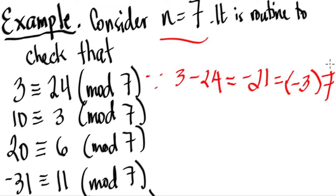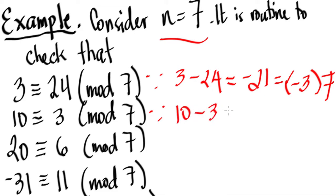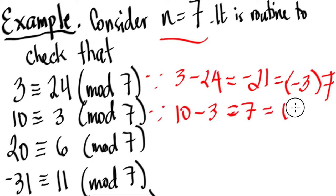Next: 10 is congruent to 3 mod 7. Why? Because 10 minus 3 equals 7, and 7 is a multiple of 7 since 1 times 7 equals 7. So that's true.